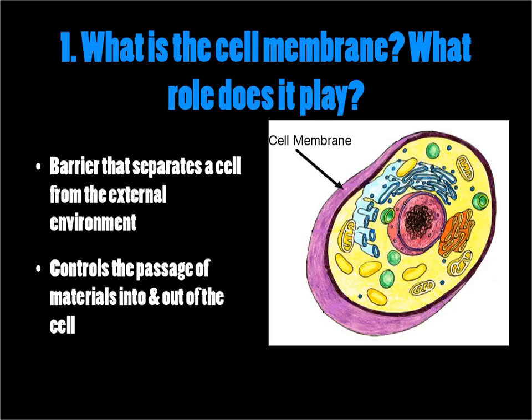Section 3.3 Cell Membrane. What is a cell membrane and what is its role for the cell? First of all, it's a barrier that separates the cell from its external environment — it separates the internal environment from the outside of the cell, the external environment. It also plays a role in the passage of materials into and out of the cell, allowing certain materials to pass and others not to pass.